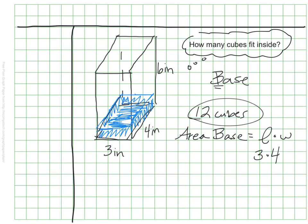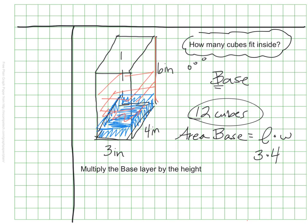Once I know my base layer, my next job is to figure out how many layers it would take to fill this shape. I could keep adding layers of 12 cubes. The number of layers is dictated by how tall this is. This shape is 6 inches tall, so if each layer is 1 inch high, I'm going to have 6 layers. So I take my base layer of 12 and multiply it by the height of 6.